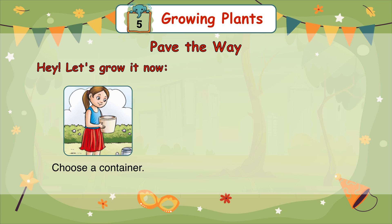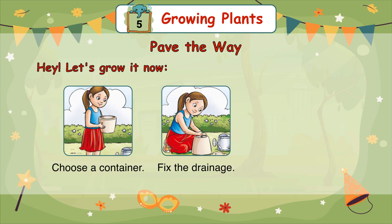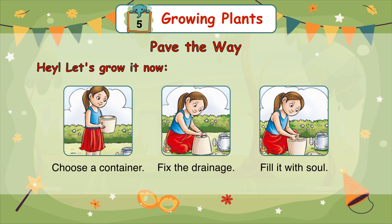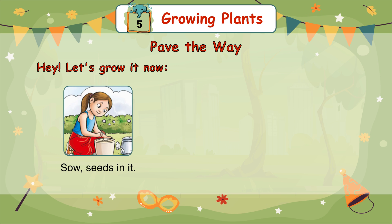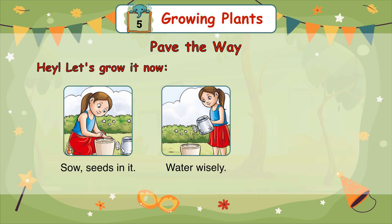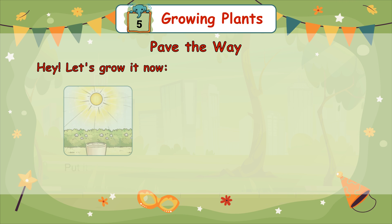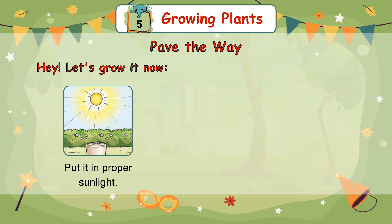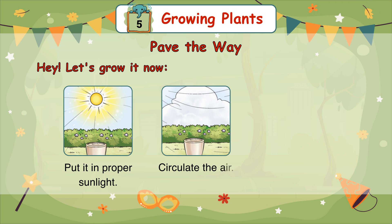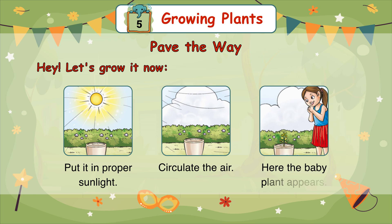Choose a container. Fix the drainage. Fill it with soil. Sow seeds in it. Water wisely. Maintain consistent moisture. Put it in proper sunlight. Circulate the air. Here, the baby plant appears.